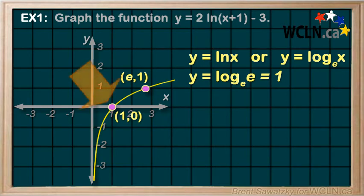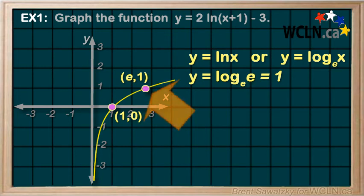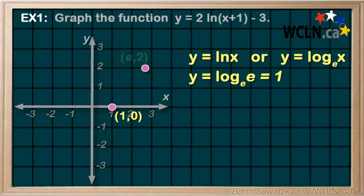For this point (1,0), we multiply the y value by 2, but 0 times 2 is still 0. So this must be an invariant point - it stays in the same position. What about this point here? Well, we multiply the y value by 2. 1 times 2 is 2, so our new point (e,2). And we can now sketch our new curve.